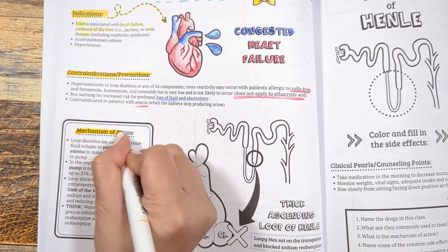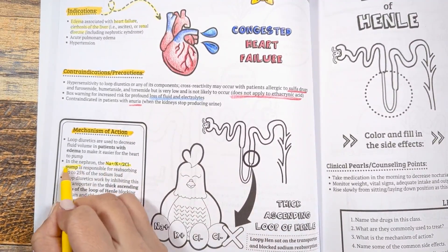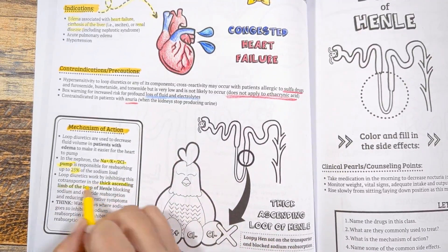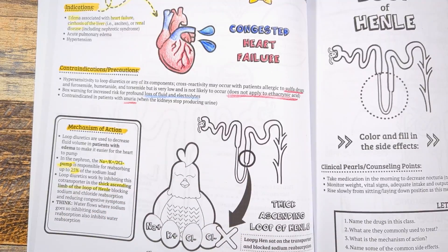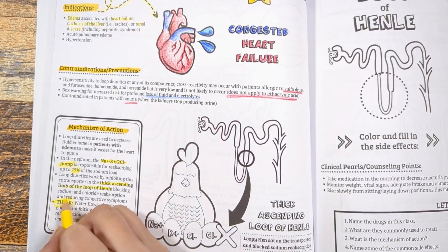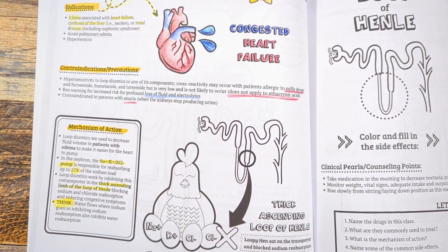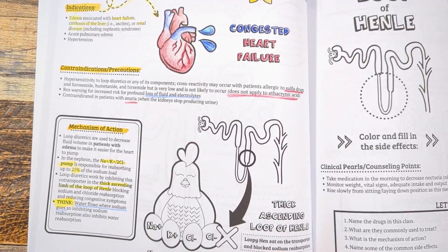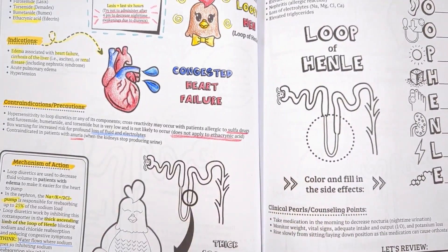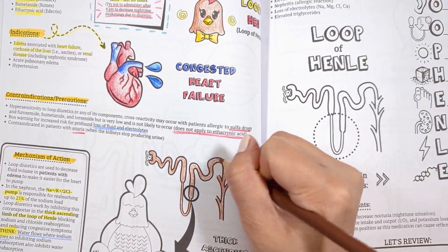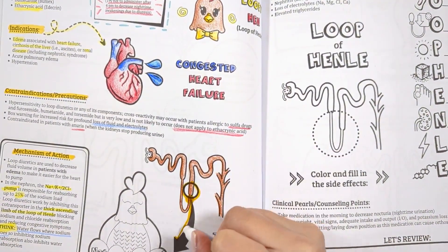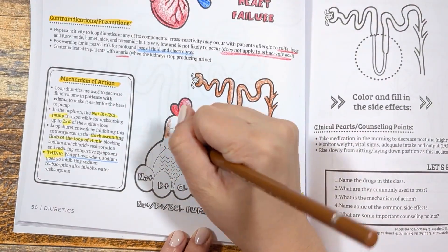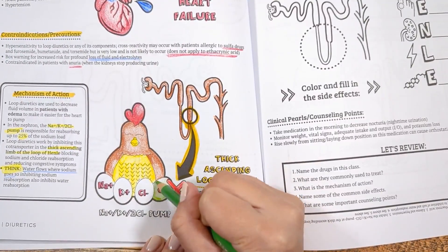Let's talk mechanism of action. Loop diuretics work on the loop of Henle to decrease fluid volume in patients with edema. In the nephron, there is a cotransporter called the sodium-potassium-2-chloride pump that is responsible for 25% of sodium reabsorption in the body. Water follows sodium because it likes to keep things in equilibrium — water flows where sodium goes. So loop diuretics work by inhibiting this cotransporter in the thick ascending loop of Henle, like the loopy hen sitting on the cotransporter eggs to block it from reabsorbing sodium and water. So instead of being reabsorbed, sodium and water get excreted out in the urine.